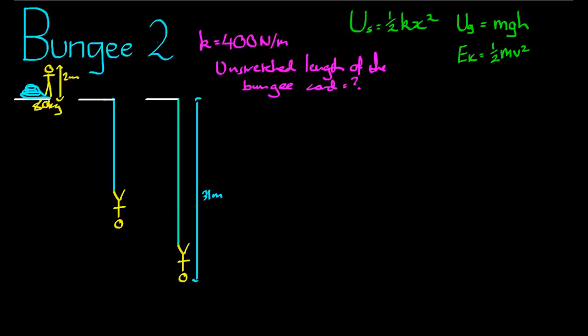First things first. All the gravitational potential energy that was lost as this bungee jumper fell from this point to that point there, has become spring potential energy. So if we can figure out how much gravitational potential energy is lost, and then we can put that in there as equal to spring potential, we can figure out the extension, and then we can figure out the unstretched length from there.